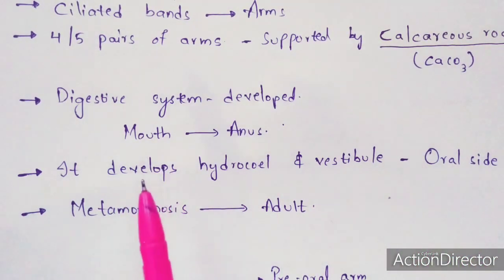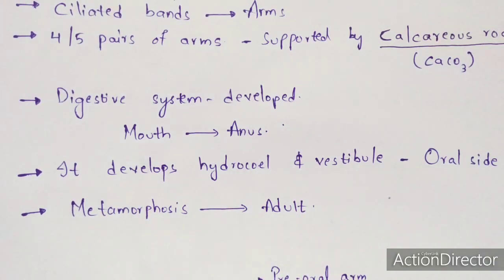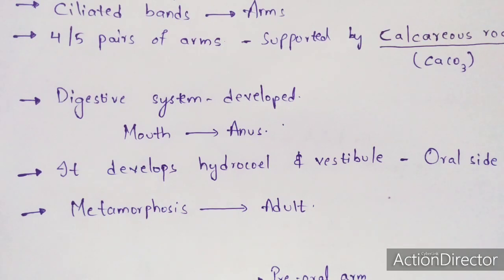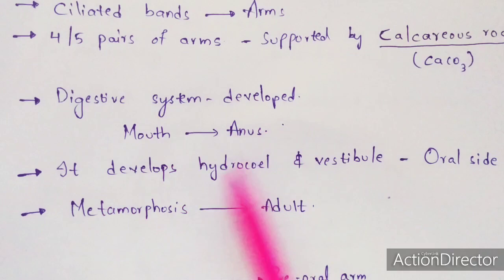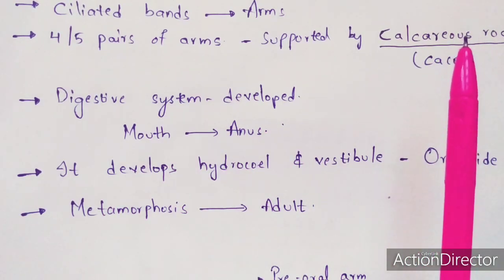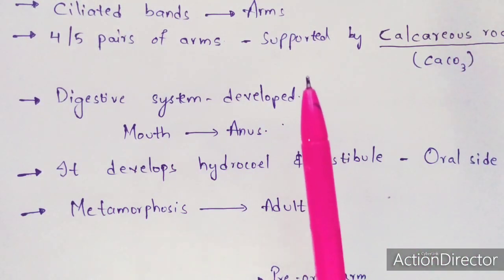The echinopluteus larva undergoes metamorphosis and becomes adult. Metamorphosis is a life cycle process: it begins from the egg, hatching of the egg occurs, then the first stage larva is produced, which transforms into the second stage larva, which converts into the third stage larva, and finally it becomes adult. That process is known as metamorphosis.